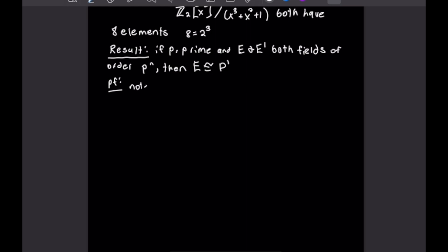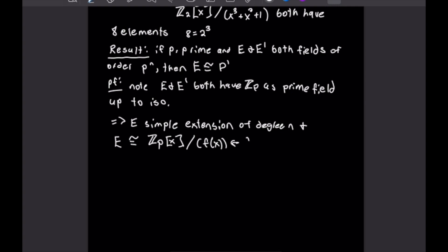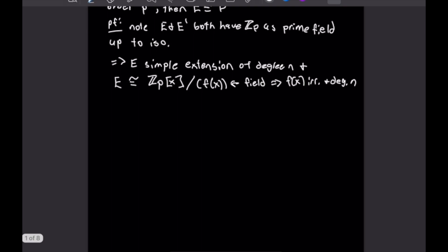We note that both E and E prime have Z_p as a prime subfield, up to isomorphism. That means E is a simple extension of degree n, and also that E is isomorphic to Z_p adjoin x, mod f(x), where f(x) is some irreducible function. So f(x) is irreducible and must also be of degree n.